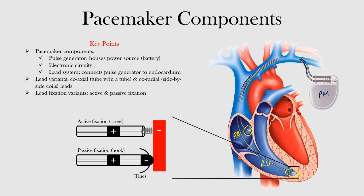Insulation materials separate the conductor cables and the lead tip electrodes. The leads can be designed as coaxial or co-radial, depending on the relationship between the cables. Coaxial leads consist of a tube within a tube, whereas co-radial leads consist of side-by-side coils.